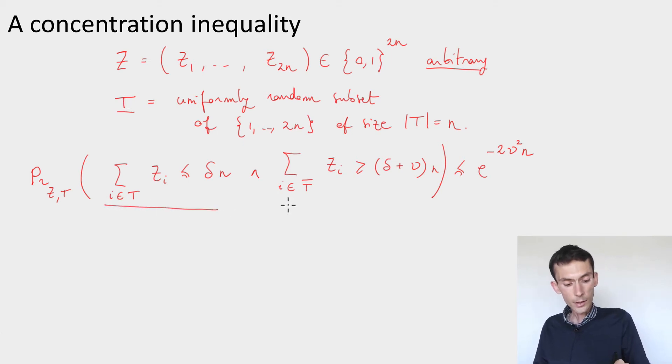then the chance that the sum of the zi's for the indices not in t is substantially larger, by some amount nu, than the sum that you observed in the indices in t, then that probability is exponentially small in nu squared times n.